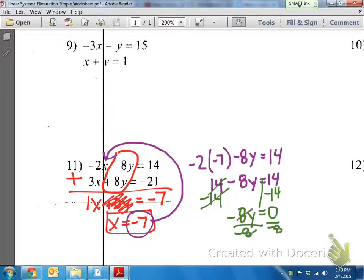Divide by negative 8. Because it doesn't matter what you divide 0 by, it's still going to be 0. So my final answer for number 11 is negative 7 comma 0. All right. There's how you do elimination.